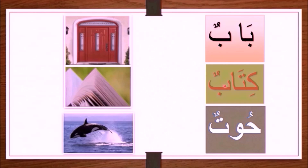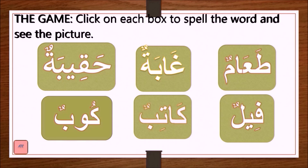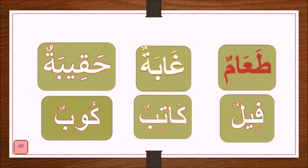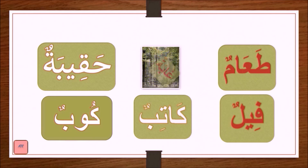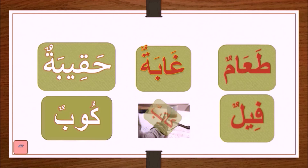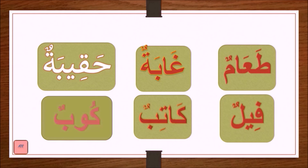Here are more examples: ḥūtun means a whale. Ṭaʿāmun means food. Fīlun means elephant. Ghābatun means forest. Kātibun means writer. And ḥaqībatun means bag, while kūbun means cup.